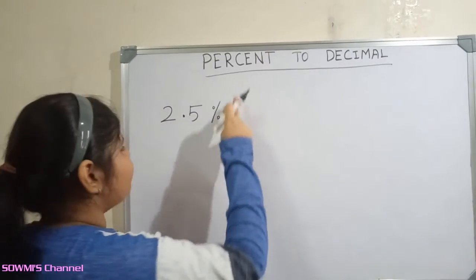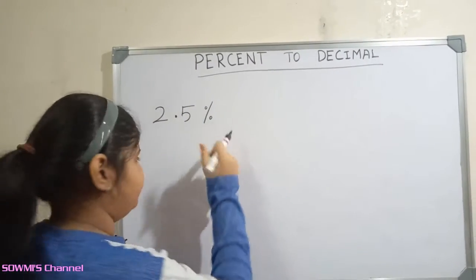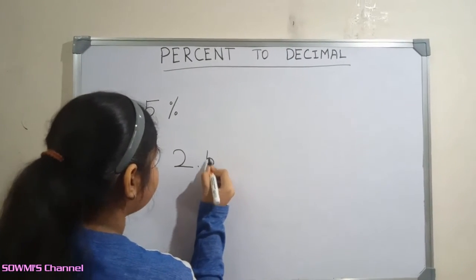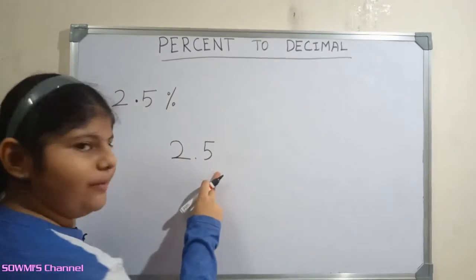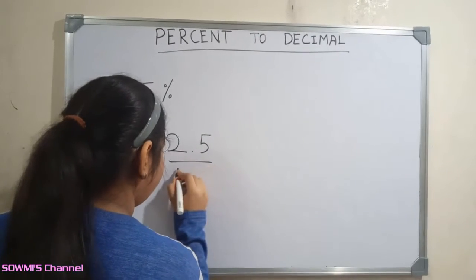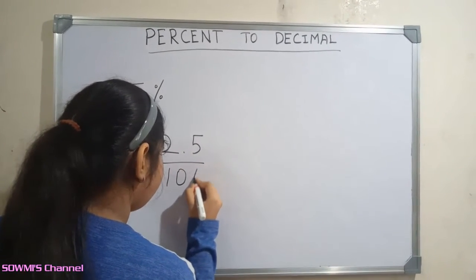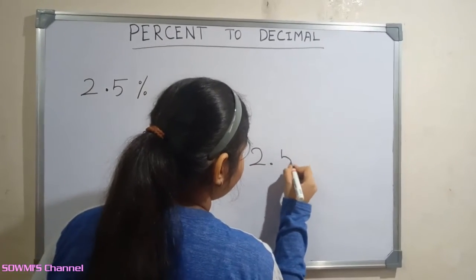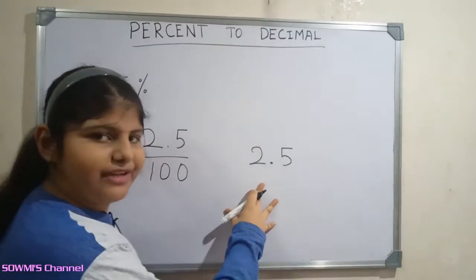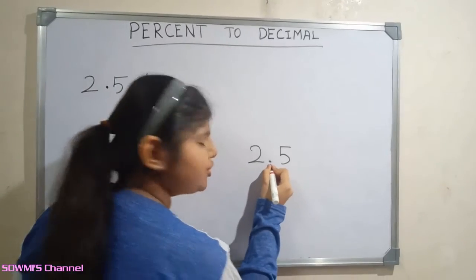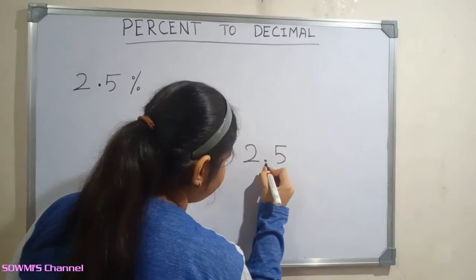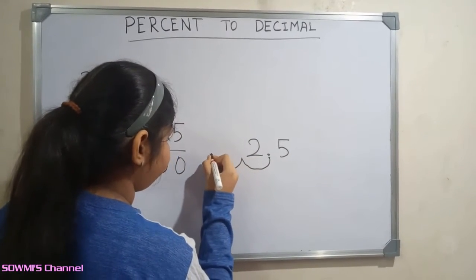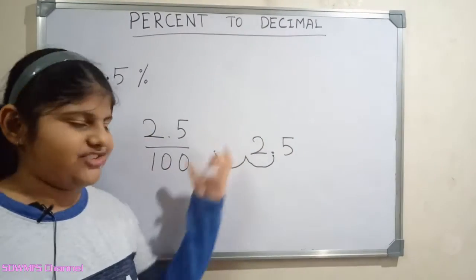Two point five percentage. First we have to remove the percentage symbol. Next we have to divide the value by hundred. Now we have to move the decimal point two places to the left — one, two — and fill the extra spaces.